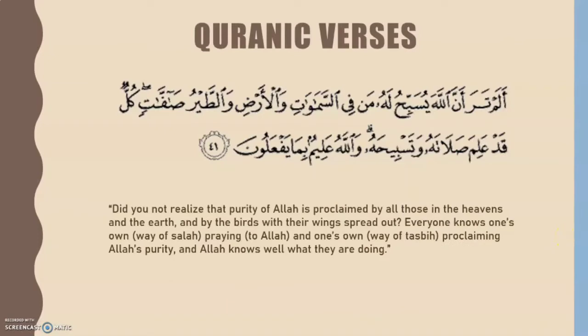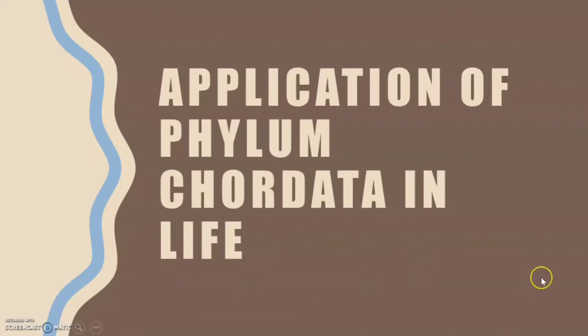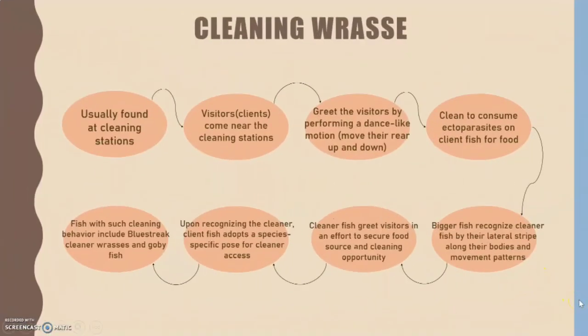The Quranic verse that explains this application is Surah An-Nur, Ayat 41: 'Do you not realize that the purity of Allah is proclaimed by all those in the heavens and the earth, and by the birds with their wings spread out? Everyone knows their own way of salah — praying to Allah — and their own way of tasbih — proclaiming Allah's purity. And Allah knows well what they are doing.' From the phrase 'birds with their wings spread out,' we observe birds moving from flower to flower to transfer pollen and seeds. Their actions are also a form of tasbih and worship, and Allah commends them.